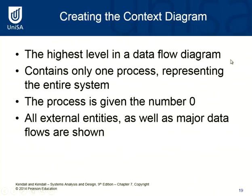The context diagram is the highest level in a data flow diagram. It contains only one process representing the system, and that process is given number zero. Numbering is important in data flow diagrams so it's easily understood by readers, users, and developers, showing which process is being expanded at a further level of detail. In addition to the one process, the context diagram shows your external entities as well as major data flows.